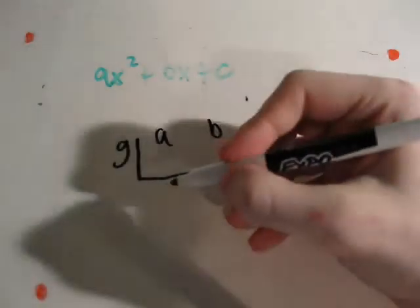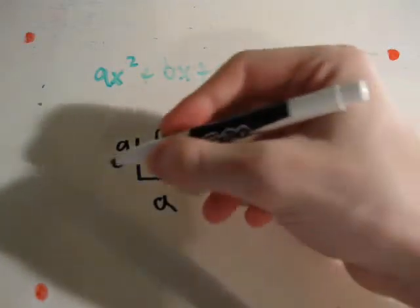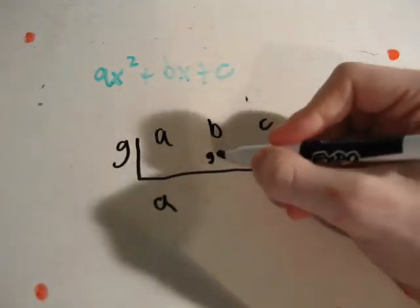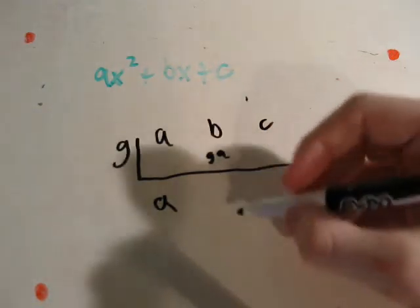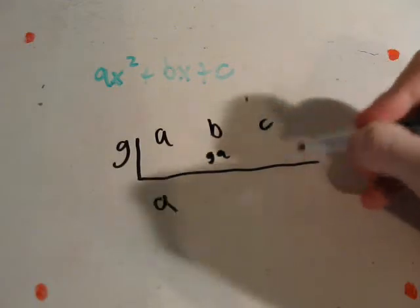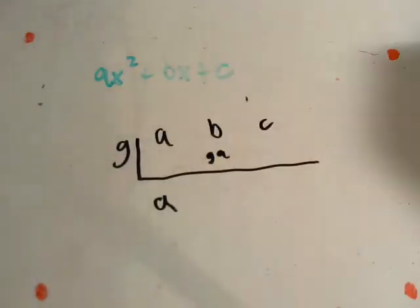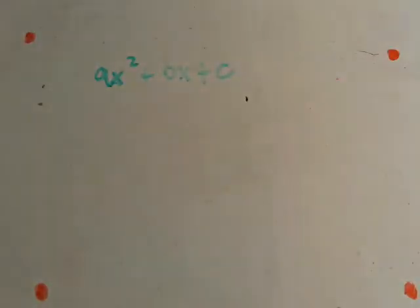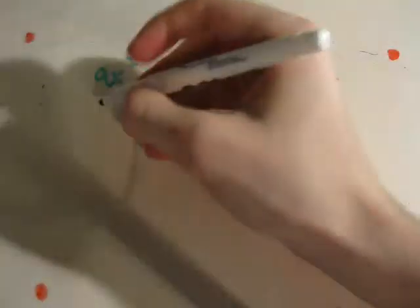Then immediately we'll bring a down, then multiply g and a, add these together, and then continue doing that until there aren't any more coefficients to do the process with. Here's an example in today's big problem.